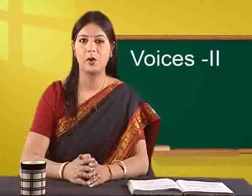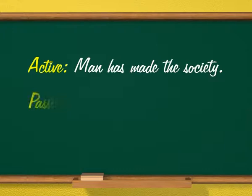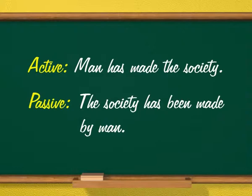We will discuss more about voices. Remember the two ways a sentence can be expressed: in active voice and in passive voice, depending on whether the subject of the sentence is doing any action or not. Let us recall a couple of sentences. Active: Man has made the society. Passive: The society has been made by man.